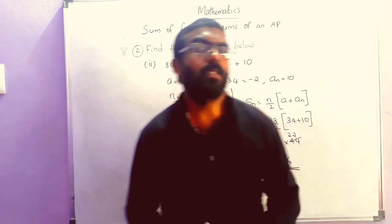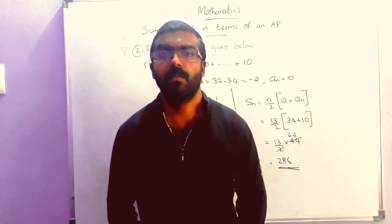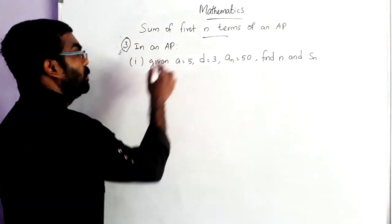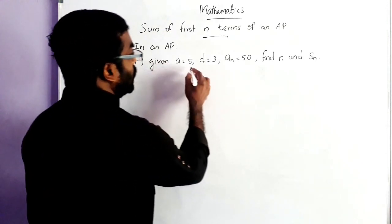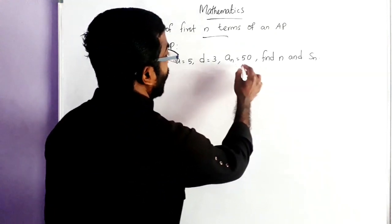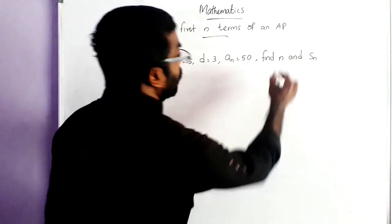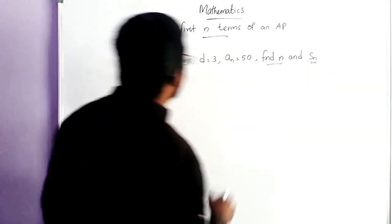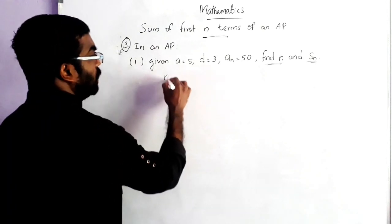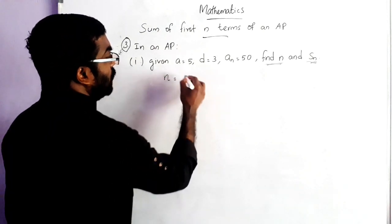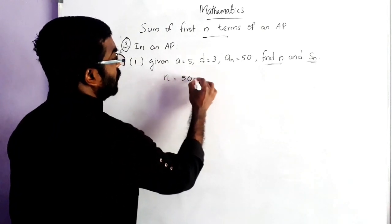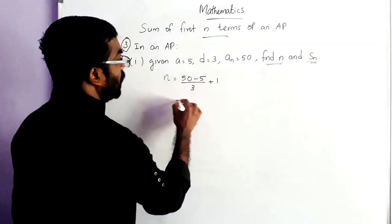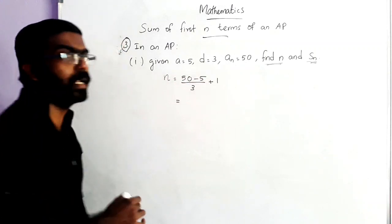The third sub-question is a format — do it yourself. Now we move on to the third question. In an AP, given A is equal to 5, D equal to 3, AN equal to 50, find N and S_N. First we can find N. We have the direct formula: N is equal to AN minus A by D plus 1.